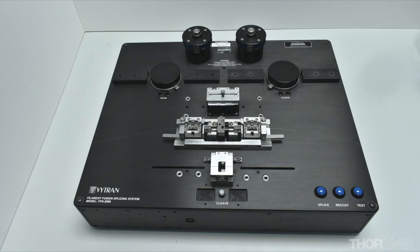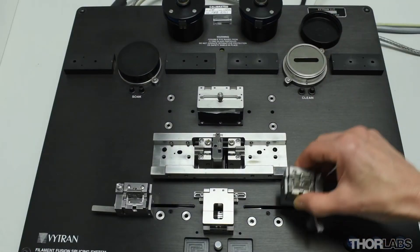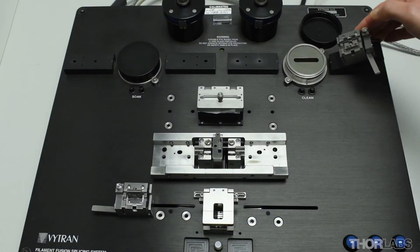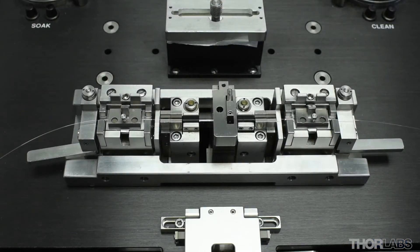The FFS2000 unit has been designed to minimise fibre handling and contact with the glass surface of the fibre. Fibre holding blocks are used to transfer the stripped fibres around the unit and the splice is carried out in an inert argon environment that minimises contamination.